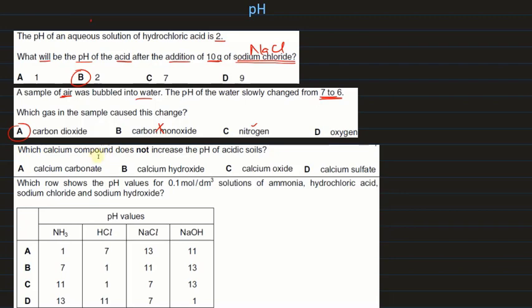Which calcium compound does not increase the pH of acidic soils? Calcium carbonate reacts with acids (producing salt, water, and CO₂) and raises pH. Calcium hydroxide is a base and reacts. Calcium oxide also reacts. But calcium sulfate cannot react with acids — sulfates have no reaction with acids — so there is no change in pH.